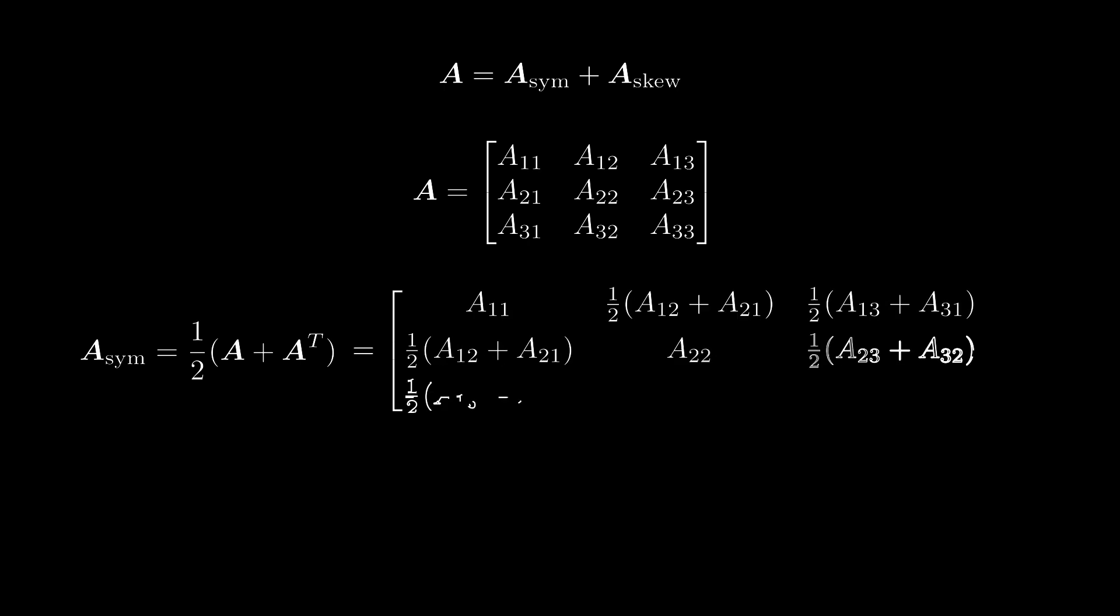If we expand this formula, we can see why this is called the symmetric part of A. The upper right and lower left off-diagonal elements of the symmetric part are equal.